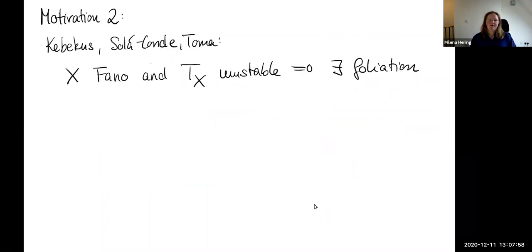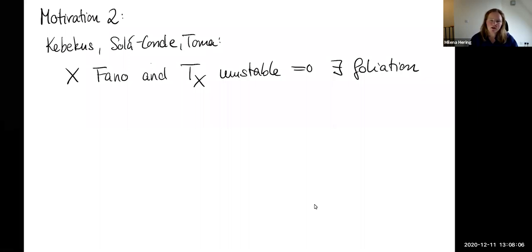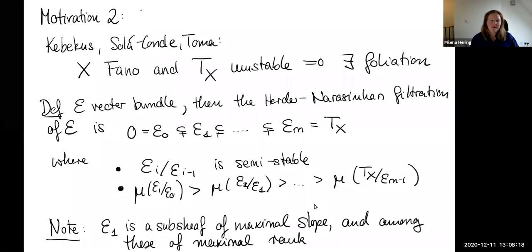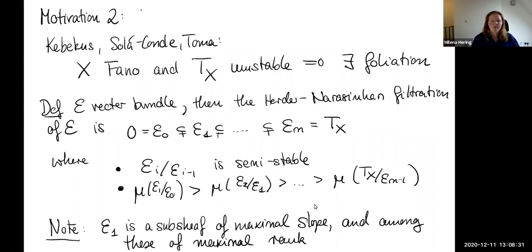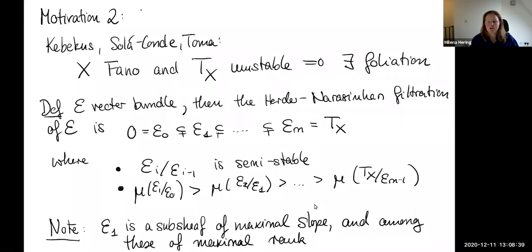The second motivation comes from a theorem of Kibikos, Solaconde, and Thomas. If X is a Fano variety and TX is unstable, then there exists a foliation. The Harder-Narasimhan filtration of E is defined so that the consecutive quotients are semi-stable and the slopes of these quotients are decreasing. To find the first non-trivial element in this filtration, you look at all sub-sheaves of maximum slope and take the one of maximum rank.